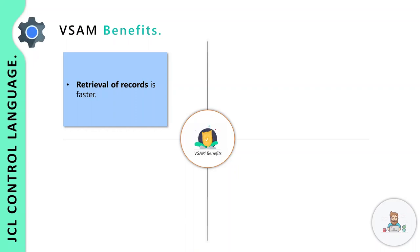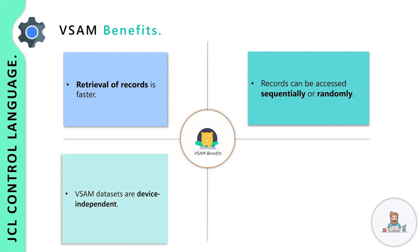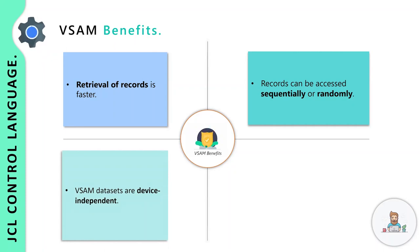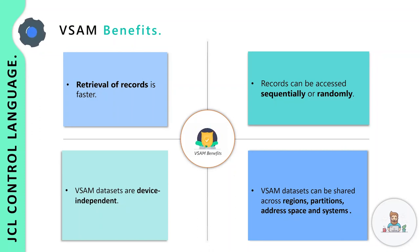The first and foremost benefit of VSAM is that retrieval of records is faster, and it is possible because of an index file. The next important feature is that records can be accessed sequentially or randomly. Third, VSAM data sets are device independent. And VSAM data sets can be shared across regions, partitions, address spaces, and systems. The icing on the cake is that you have the IDCAMS utility that can be used to manage or maintain the VSAM data set.